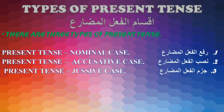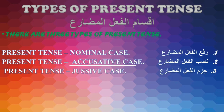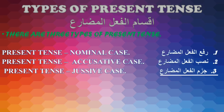Our next topic is types of present tense, Aksamul Fil Muzari. There are three types of present tense: Nominal (rafa' fil-ul muzari), Accusative (nasb fil-ul muzari), and Jussive (jazm fil-ul muzari).